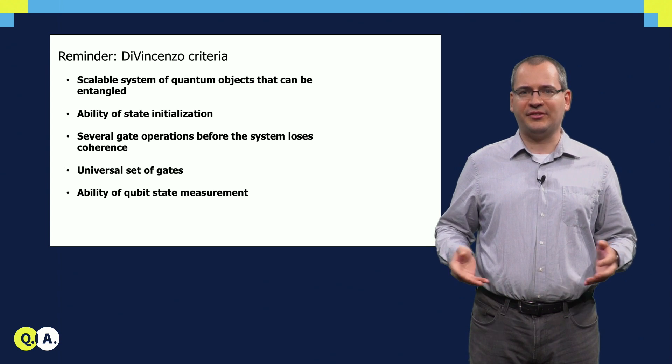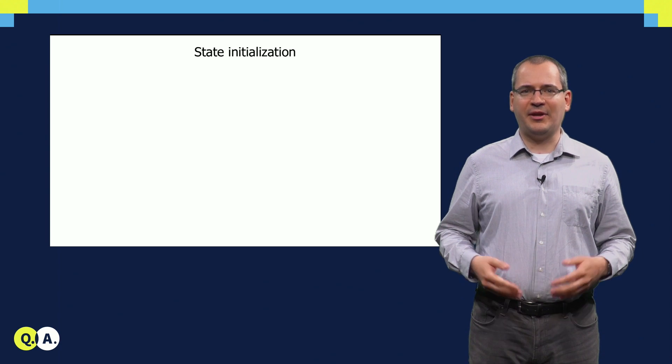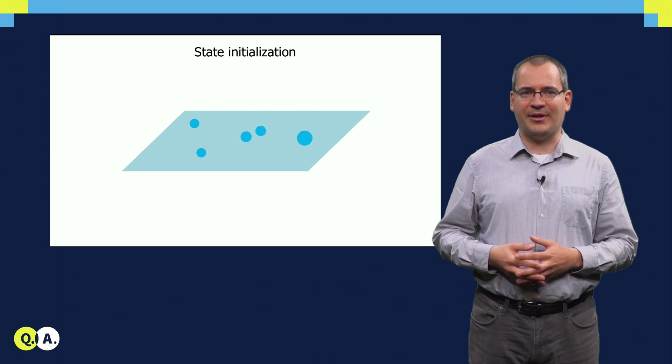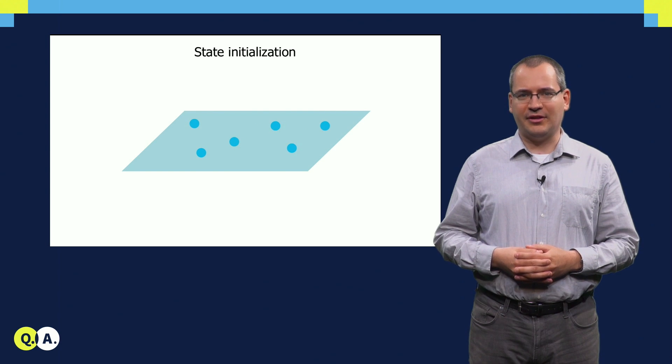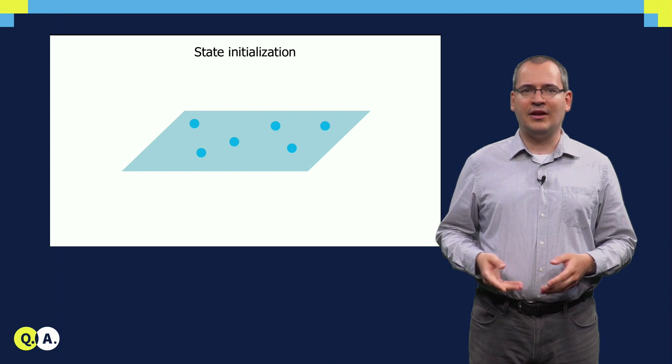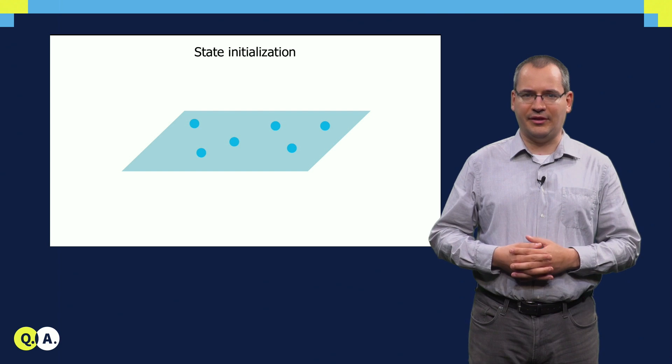So let's see how these criteria are fulfilled for a set of anyons. As Michael has shown in his lecture, we create the anyons from actual electrons. Specifically, the Ising anyons we will discuss in detail later on are created pair-wise. Scalability is then provided by the ensemble of anyons we can create in our physical device.